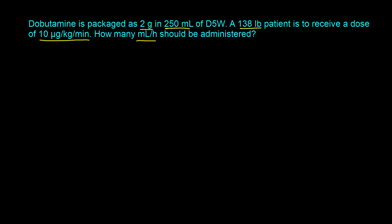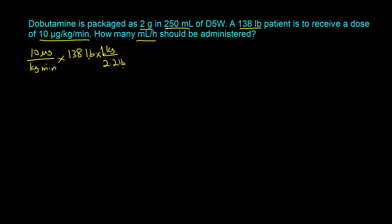The real strategy is to start off with 10 micrograms per kilogram per minute. This kilogram is a normalized dose with respect to the patient's weight, so we can take care of the kilograms in the denominator by using the weight. The patient is 138 pounds, but pounds can't cancel kilograms, so we need to convert pounds to kilograms using the conversion 2.2 pounds = 1 kilogram. Now we can cancel the pounds, and for dimensional analysis you need the unit in the numerator and the same unit in the denominator — so pounds cancel out and kilograms also cancel out.